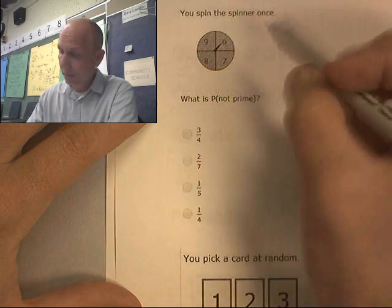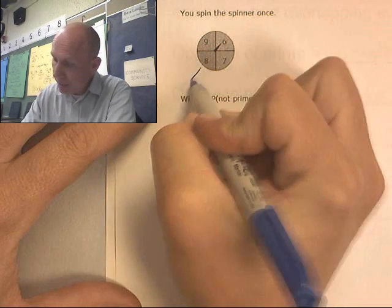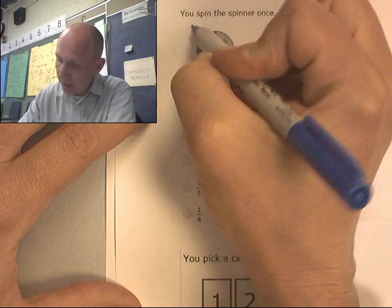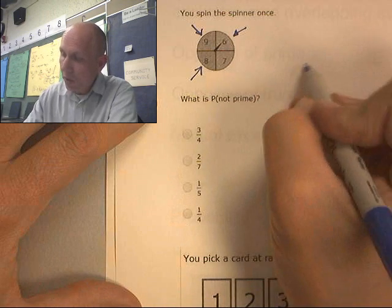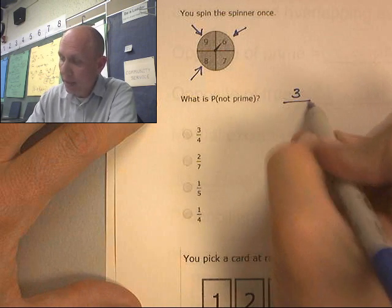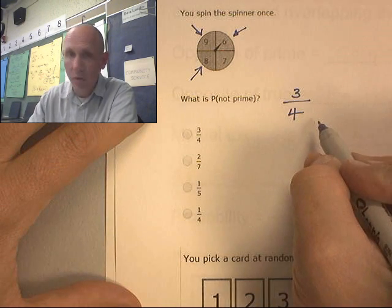Which of these are composites? Is 8 composite? Yes. Is 9 composite? Yes. Is 6 composite? Yes. So I have 3 composites over 4 total.